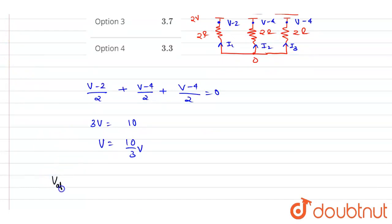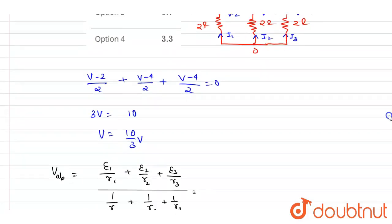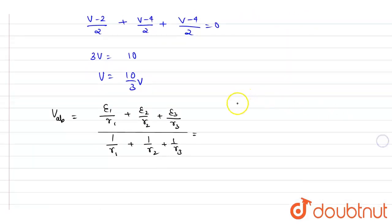You can also do the same by using the equivalent resistance and equivalent EMF. So E_equivalent will be nothing but the potential difference between them: E1/R1 plus E2/R2 plus E3/R3 divided by 1/R1 plus 1/R2 plus 1/R3. So if you see here, it is 2/2, 4/2, 4/2 on top. You can either use the above one or this one. So it will be: 1 plus 2 plus 2 over half plus half plus half, which equals 10 by 3 only. So in this way also you can do the same.